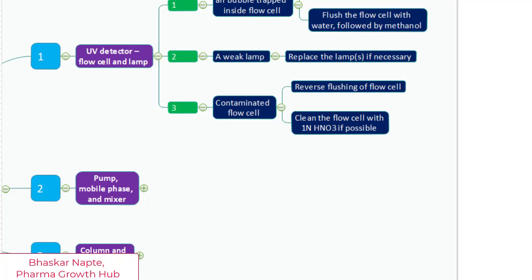then cleaning the flow cell with one normal nitric acid under expert advice can be carried out. But be very careful while using nitric acid for flushing your flow cell. You can also think of cleaning the flow cell from the outer surfaces with solvent like methanol. Make sure that the surface of the flow cell is not opaque.